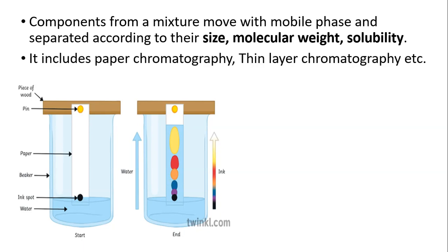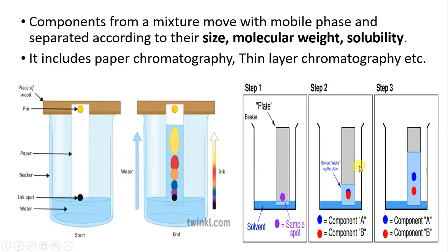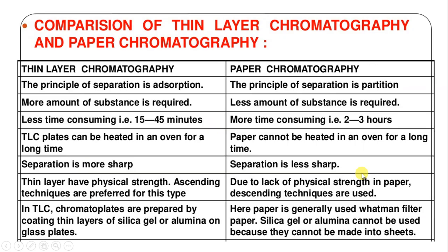There are two famous types of chromatography. Paper chromatography uses the principle of partition, while thin layer chromatography works on the principle of adsorption. Thin layer chromatography takes less time than paper chromatography, requires more sample, uses a silica gel sheet that is heated in an oven, and produces a sharper separation. Paper chromatography requires less sample and uses Whatman filter paper with an ascending technique; thin layer chromatography uses a descending technique.